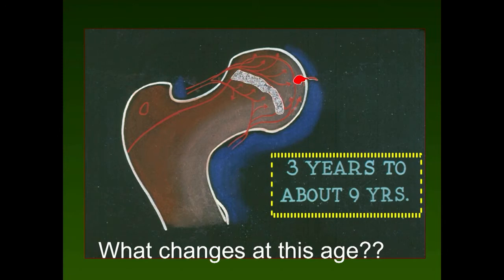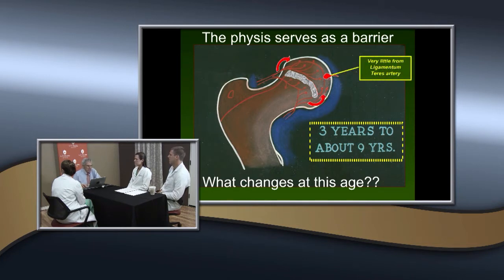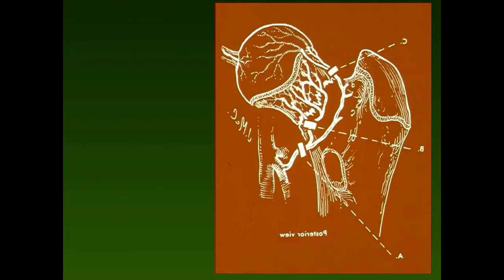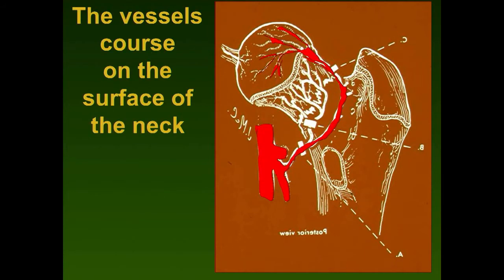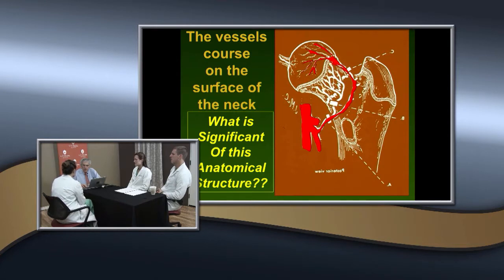Once the physis forms a true barrier, how does blood get to the femoral head? It goes around the physis — retrograde. There is very little contribution from the ligamentum teres artery. The vessels course within the capsule but also on the surface of the neck. What's significant is that if those vessels are cut or injured, you lose blood supply to the head — making the femoral head very vulnerable to trauma and subsequent avascular necrosis.